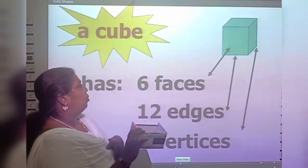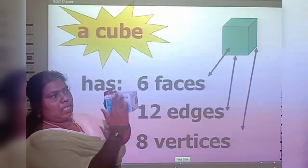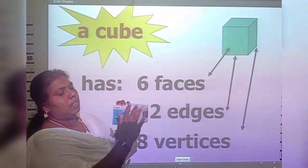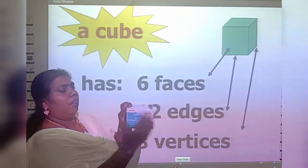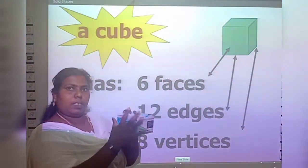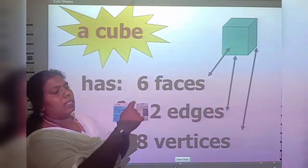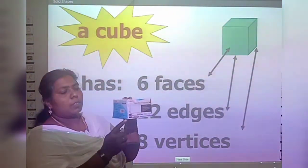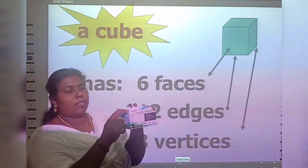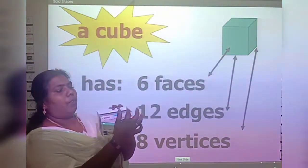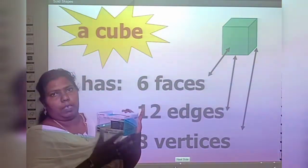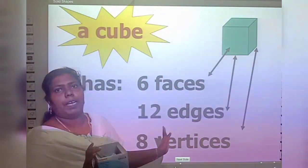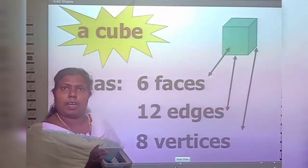So we understand that a cube has 6 faces — each face is square-shaped. Then 12 edges and 8 vertices. The cube has 6 faces, 12 edges, and 8 vertices.